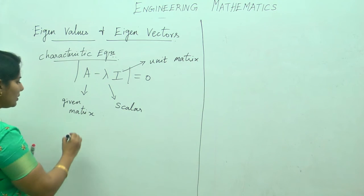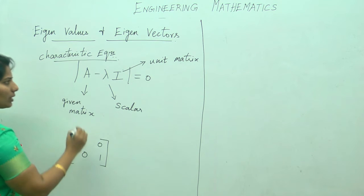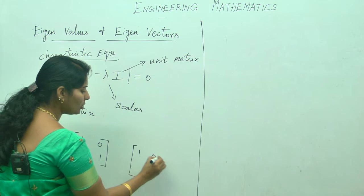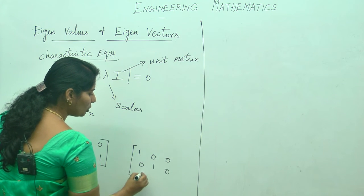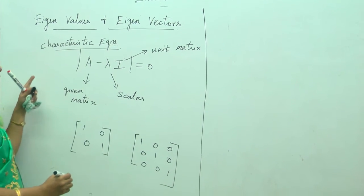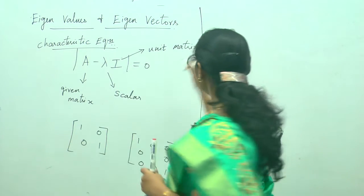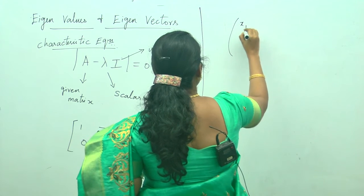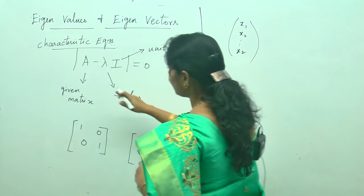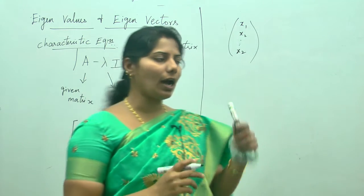The unit matrix is taken accordingly. If it is a 2×2 matrix, then you take it as [1, 0; 0, 1]. If it is a 3×3 matrix, then you take the unit matrix as [1,0,0; 0,1,0; 0,0,1]. The eigenvectors are the vectors x1, x2, and so on, satisfying the characteristic equation A minus lambda I into x-bar equals 0.